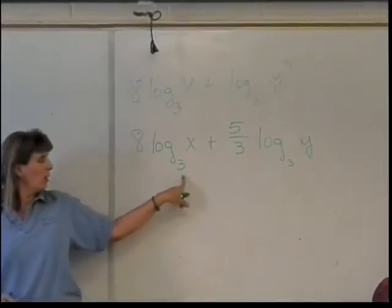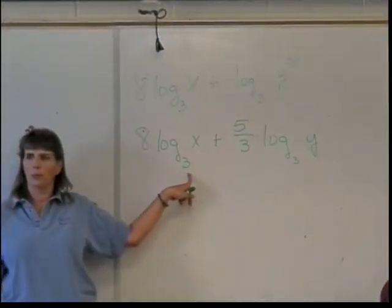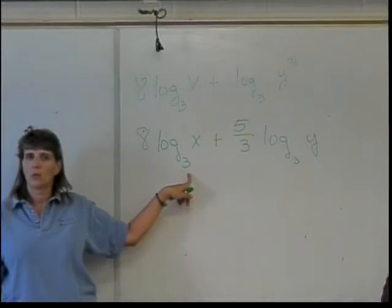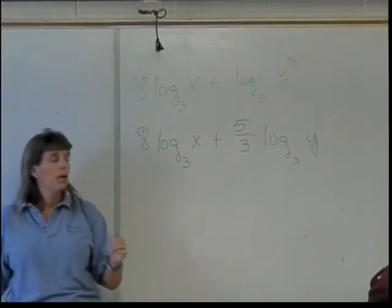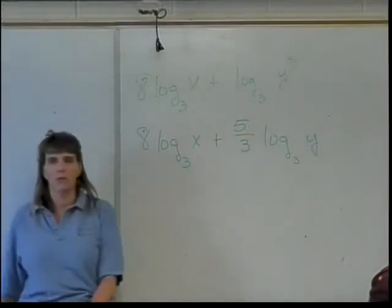What is the argument of this log base 3, and how do I know? In other words, what am I taking the log base 3 of? Is it the x or the x plus 5 thirds, and how do I know?